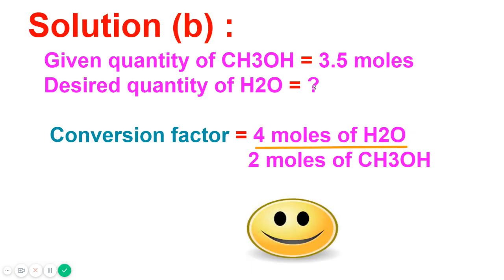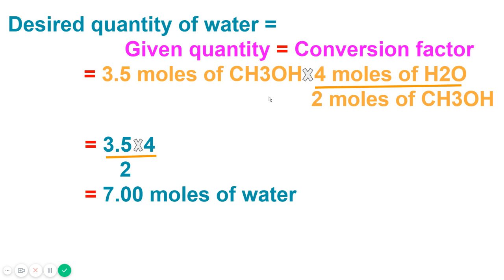For part (b), the given quantity of methanol is 3.5 moles and we need to find the desired quantity of water. The conversion factor is 4 moles of water over 2 moles of methanol — the quantity to be found is in the numerator. Multiplying 3.5 × (4/2) gives 7 moles of water. So for 3.5 moles of methanol, 7 moles of water are produced.